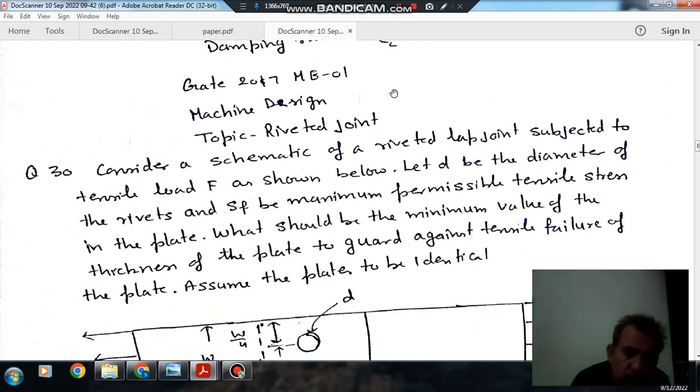Hello, welcome again. We are solving some questions of machine design. The topic is riveted joint number 30 from gate 2017 ME-01.